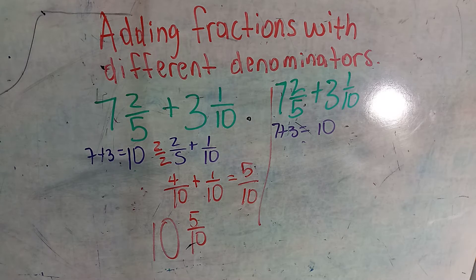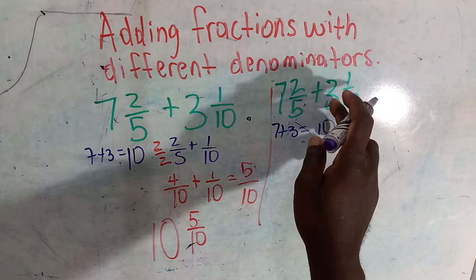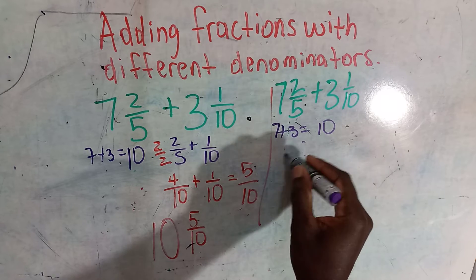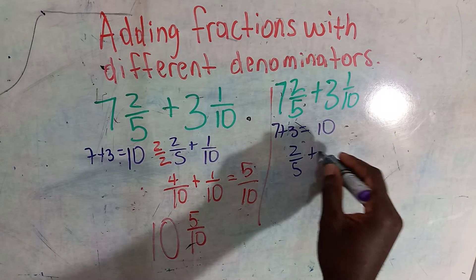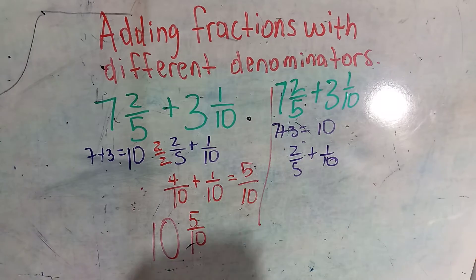Let's jump back over to here where we were before. So seven plus three equals ten, whole numbers. Then we have what? We have the fractions by themselves to deal with.